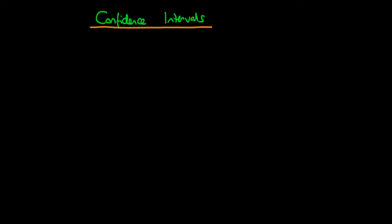In this video I want to talk about the concept of confidence intervals. Firstly, I'm going to explain how we work out what a confidence interval is for a parameter. The idea with least squares is that we get some estimate of the parameter, which I'm going to call beta hat. But then instead of just stating a point value, we are going to state a range of values around that particular parameter, and the idea is that this has something to do with the error in that particular estimate.